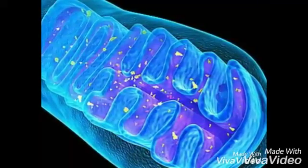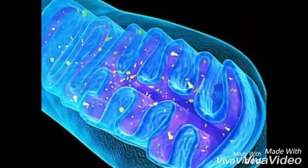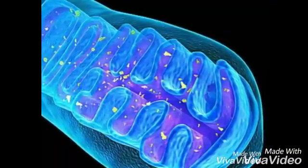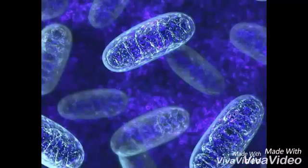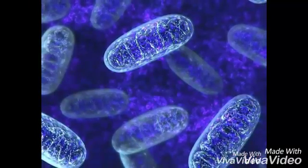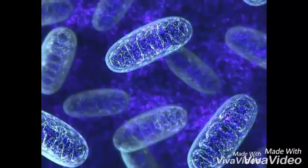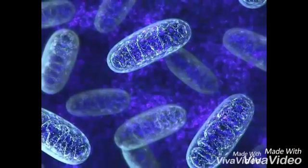They are made of two membranes, the outer and the inner, which folds over many times and creates layered structures called cristae. They are special because they have their own DNA and ribosomes.